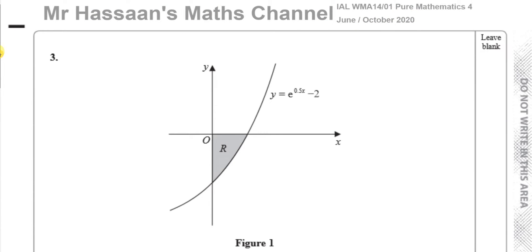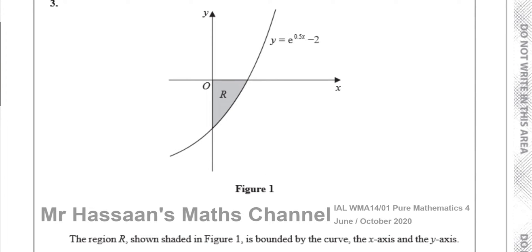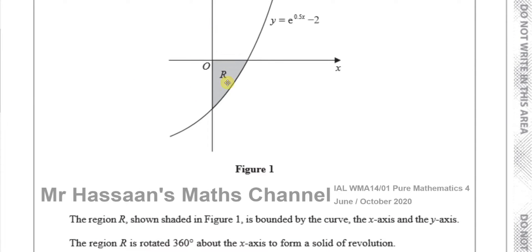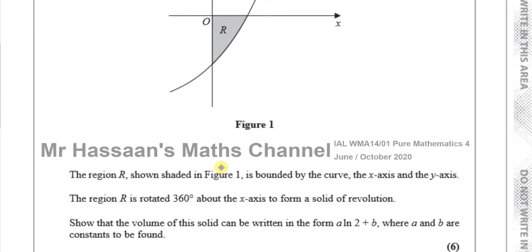This question is about a region R which is bounded by the curve y equals e to the power of 0.5x minus 2, the x-axis and the y-axis. The region R is rotated 360 degrees about the x-axis to form a solid of revolution. Show that the volume of this solid can be written in the form A ln 2 plus B, where A and B are constants to be found.